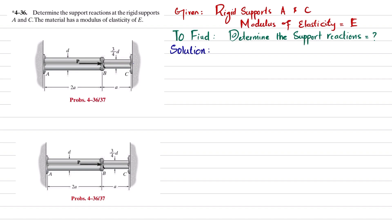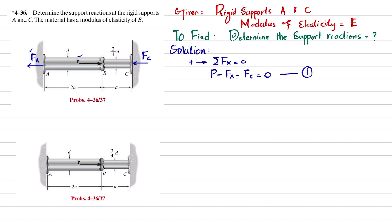Let's start with the solution. If you remove the support at C, there will be a reaction force in the direction opposite to P, represented as Fc. If you remove the support at A, you will have a reaction force equal to Fa. You can find Fc and Fa using the equation of equilibrium: the sum of all forces along the x-direction equals zero. P is in the positive x direction, minus Fa and minus Fc. This is equation number one.